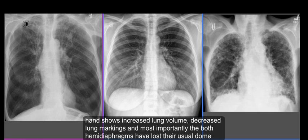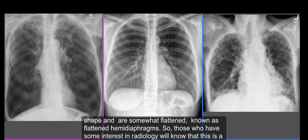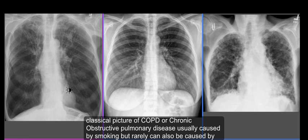The X-ray on your left hand side, on the other hand, shows increased lung volume, decreased lung markings, and most importantly both hemidiaphragms have lost their usual dome shape and are somewhat flattened — known as flattened hemidiaphragms. Those with some interest in radiology will know that this is a classical picture of COPD, or chronic obstructive pulmonary disease, usually caused by smoking but rarely also caused by alpha-1 antitrypsin deficiency.